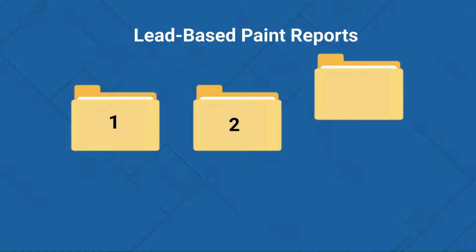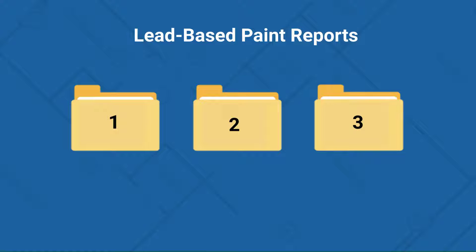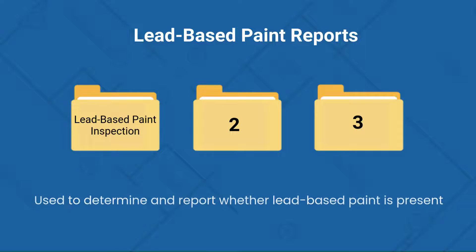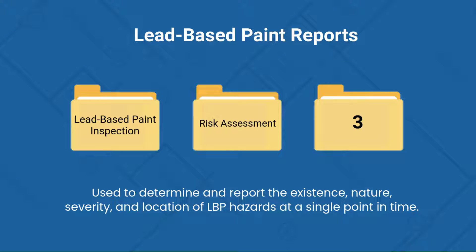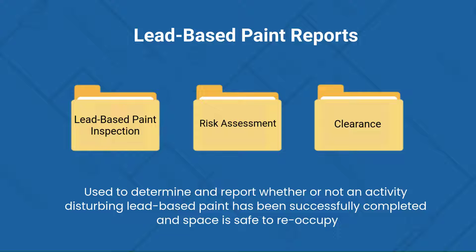There are three primary investigative processes for lead hazard identification. A lead-based paint, or LBP, inspection is used to determine and report whether lead-based paint is present. A risk assessment is used to determine and report the existence, nature, severity, and location of LBP hazards at a single point in time. A clearance examination is used to determine and report whether or not an activity disturbing lead-based paint — lead abatement, renovation, repair, and/or painting — has been successfully completed and the space impacted is clean enough to safely reoccupy.